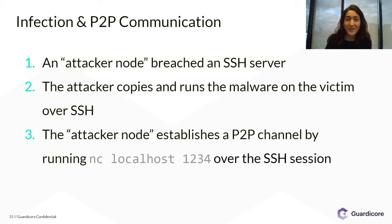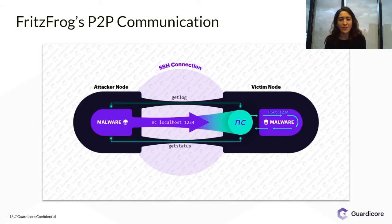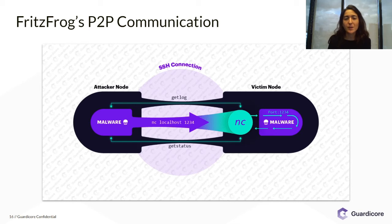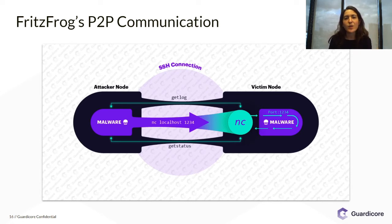If we want to see that more visually, let's take a look at this graphic. Initially, we have only the attacker node with the malware running on it. The attacker node manages to breach a new SSH server on the internet and copies the malware onto the new victim and runs it there. Now there is an active SSH session going on between the two ends, and over this session the attacker node runs netcat localhost 1234.